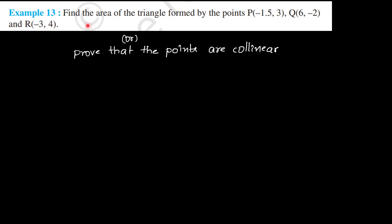Find the area of triangle formed by the points P(-1.5, 3), Q(6, -2), and R(-3, 4).